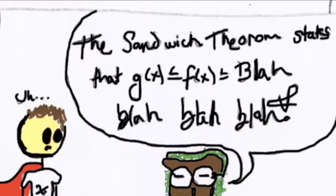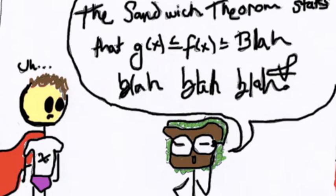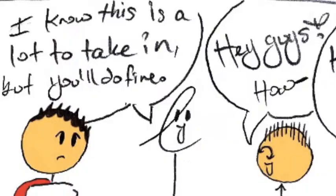The Sandwich Theorem states that g of x is less than or equal to f of x, which is less than or equal to blah, blah, blah, blah. Thank you, Mr. Sandwich Theorem. Don't worry, you don't need to know that. I know this is a lot to take in, but you'll do fine.